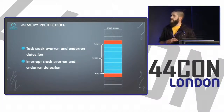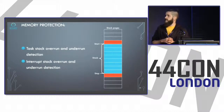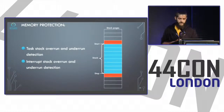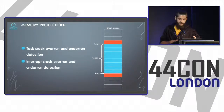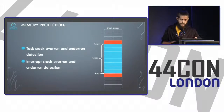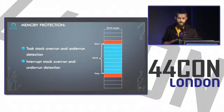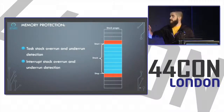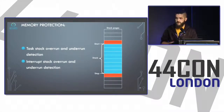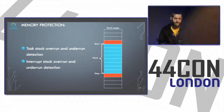VxWorks provides some MMU-based features in addition to virtual memory support, and some non-MMU-based heap protection. One protection is task and interrupt stack overrun and underrun detection: they allocate memory before and after the task stack that is non-readable, non-writable, and non-executable — so if you try to access them, an exception is raised and caught by the OS.